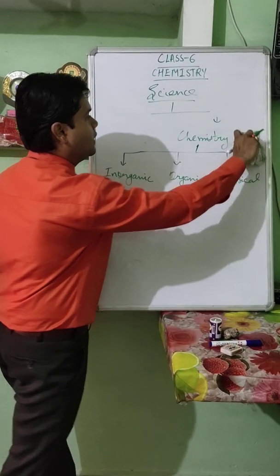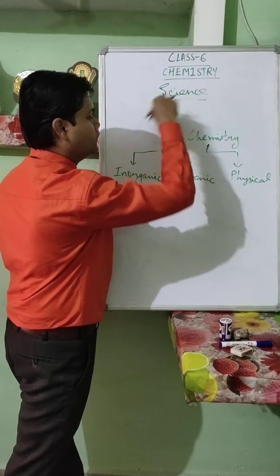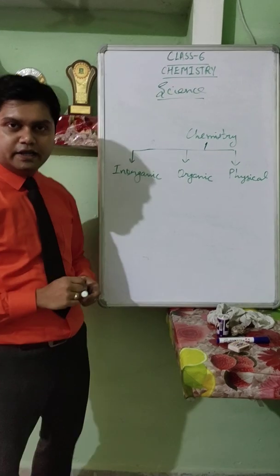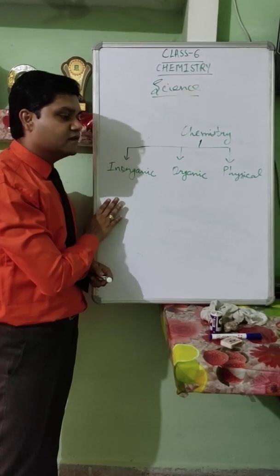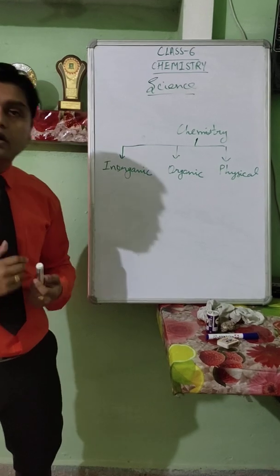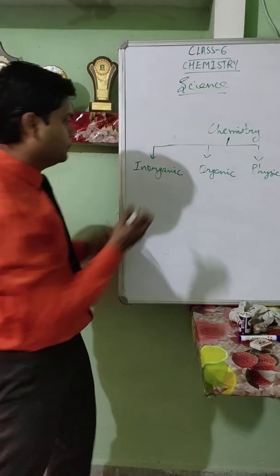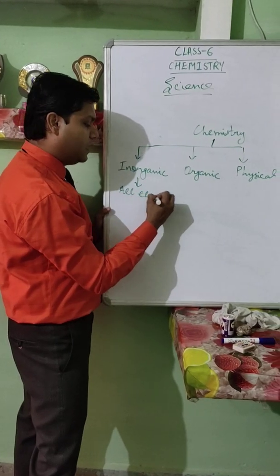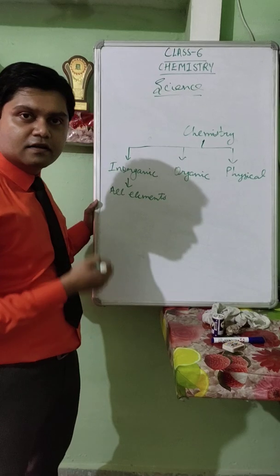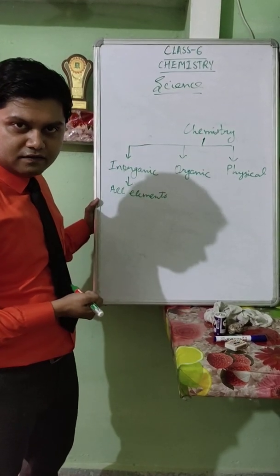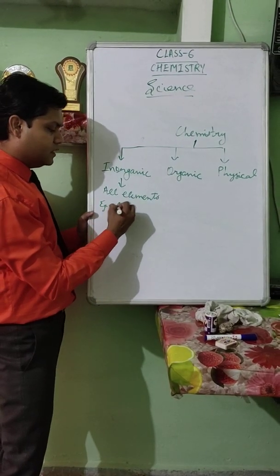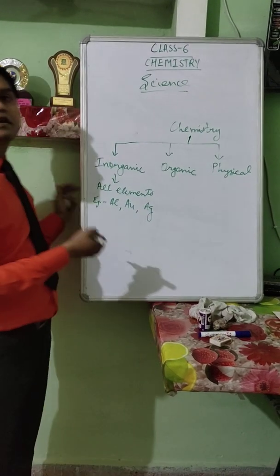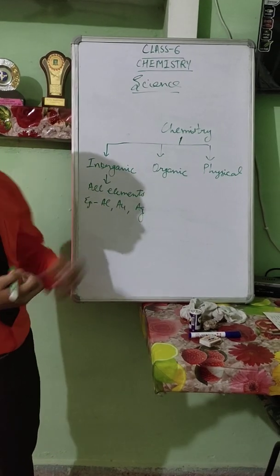So first of all, what is Inorganic Chemistry? Inorganic Chemistry is the study of all compounds except carbon compounds. In Inorganic Chemistry we discuss all the elements present inside as well as outside the earth's crust. For example, Aluminium, Gold, and Silver all come in the category of Inorganic Chemistry.